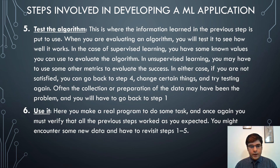In the fifth step, we test the algorithm — this is where the information learned previously is put to use. In supervised learning, you have known values to evaluate the algorithm. In unsupervised learning, you may use other metrics to evaluate success. If not satisfied, you can go back to step four, change certain things, and test again; sometimes you may need to go back to step one if data collection or preparation was the problem. The sixth step is to use it in a live environment — you create a real program to perform tasks, and verify all previous steps worked as expected. New data may require revisiting steps one through five.